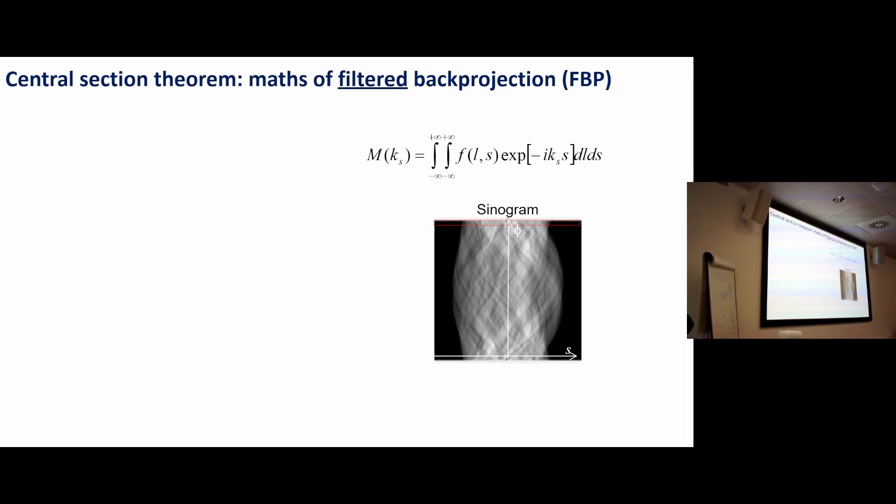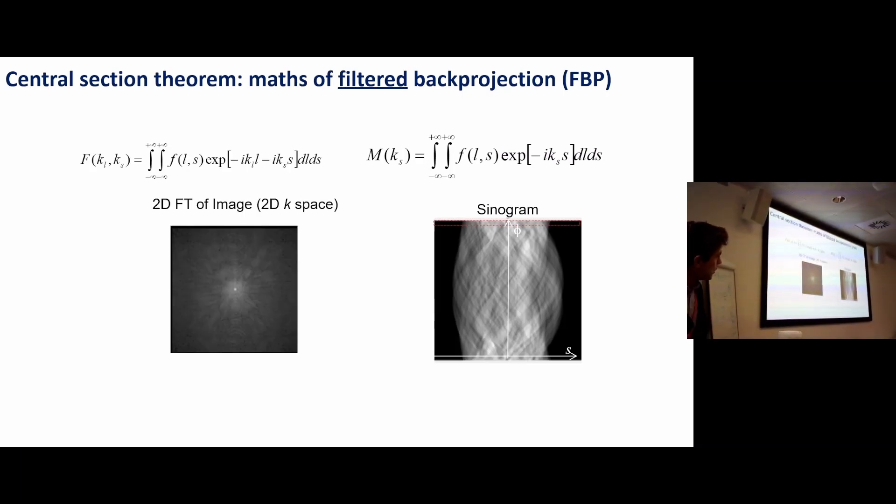By the way, if there are any MR enthusiasts out there, what I'm talking about here would actually correspond to a radial k-space sampling trajectory. Again, just like I linked BPF of interest to MR people, this is also of interest to MR people, not just PET and CT and SPECT people. That's on the right hand side dealing with the sinogram. On the left hand side I'm just writing down—fls is what we want, m phi the sinogram is what we have.